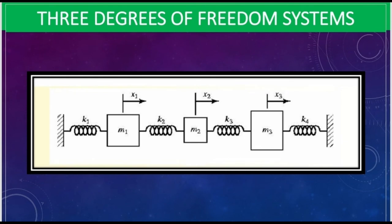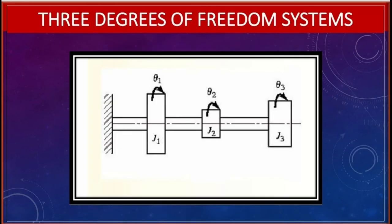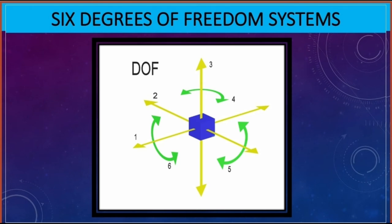Examples for three degrees of freedom systems are also shown. For a six degree of freedom system: a body in space has three translatory motions along the x-axis, y-axis, and z-axis, as well as three rotatory motions about the x-axis, y-axis, and z-axis — therefore the degree of freedom of this system is six.